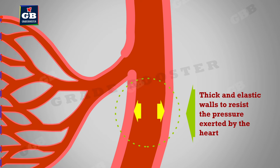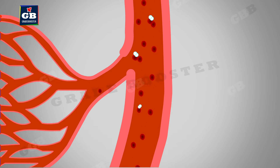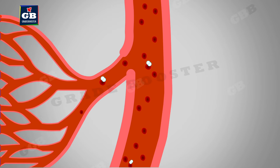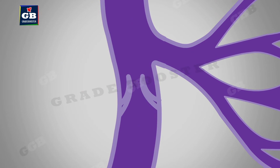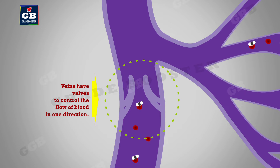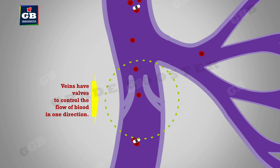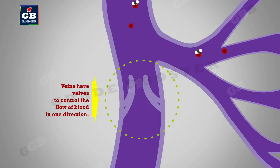pressure exerted by the heart. They carry oxygenated blood from the heart to various parts of the body. Veins collect the deoxygenated blood from various parts of the body and bring it to the heart. They do not need thick walls because the blood is not under pressure, but they have valves to control the flow of blood in